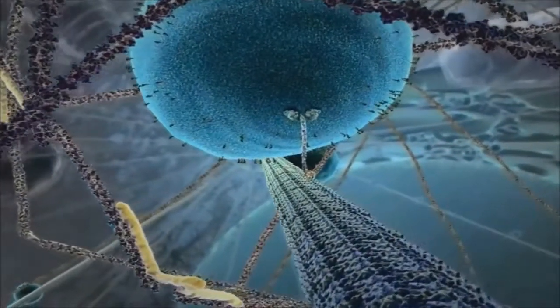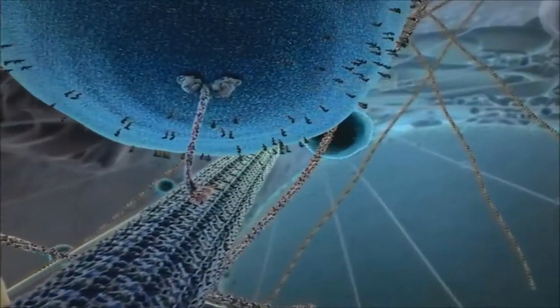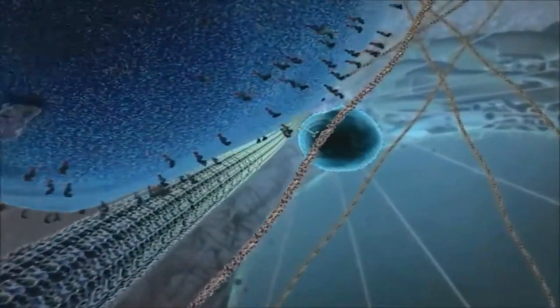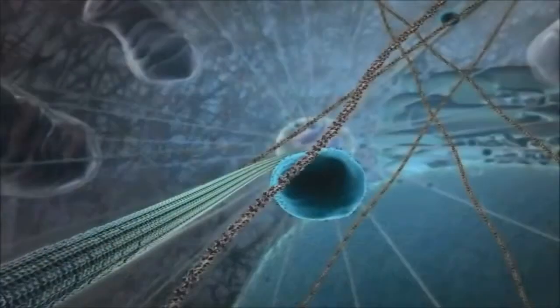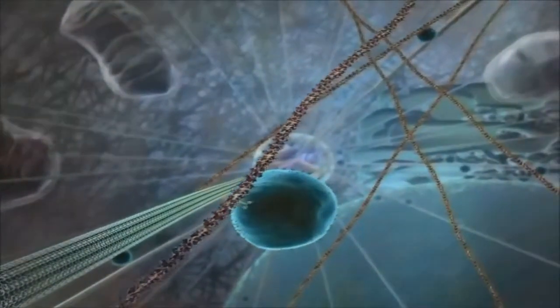For example, kinesins transport vesicles around in the internal postal system of the cell. This complexity did not arise by chance in Darwin's warm little pond. It is the work of masterminds, God, the Father, and Son.